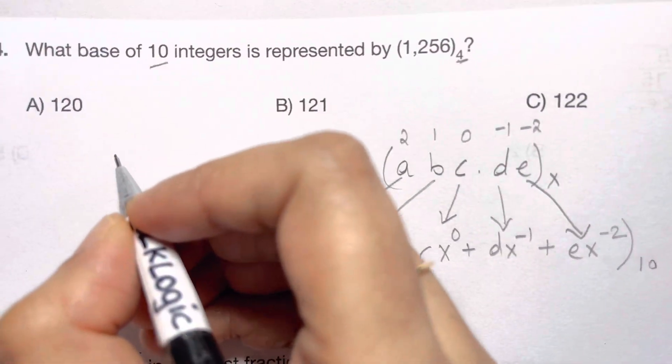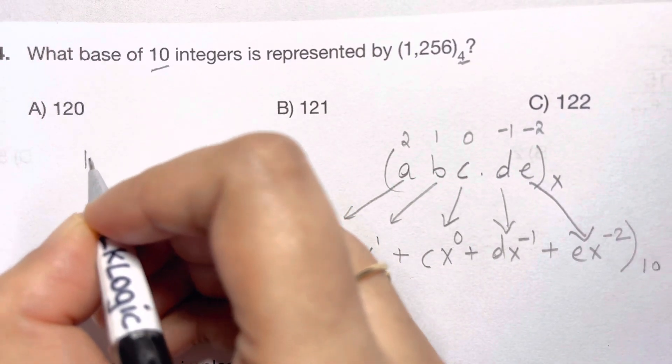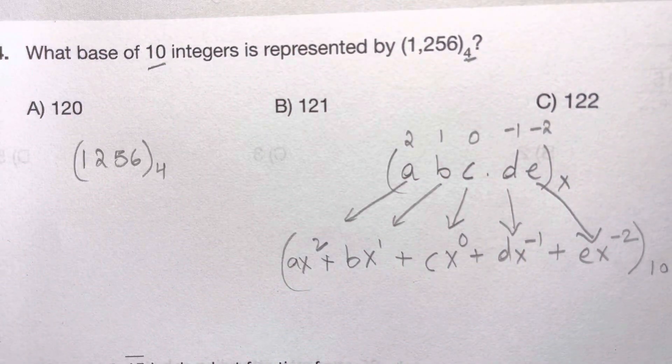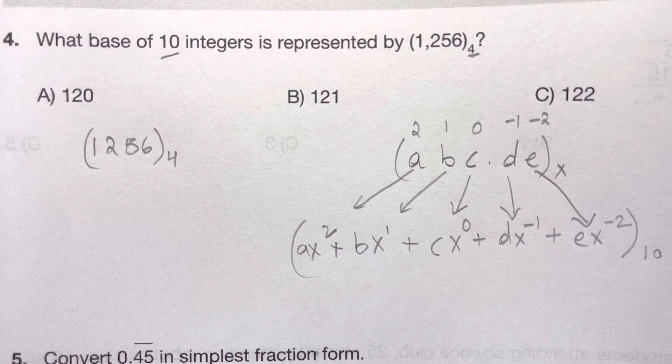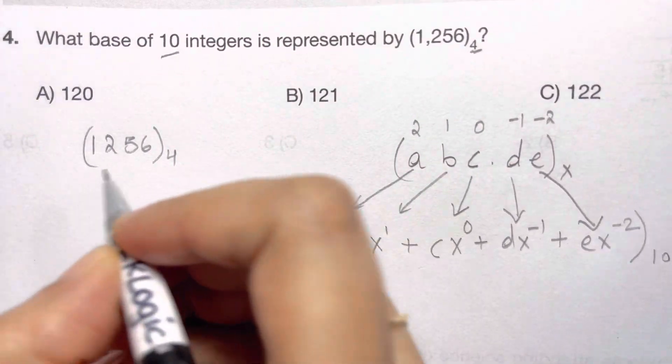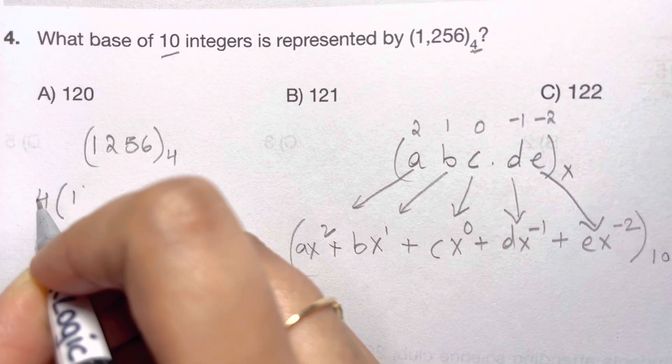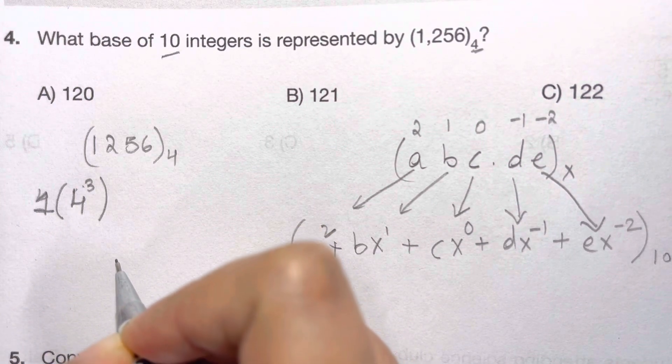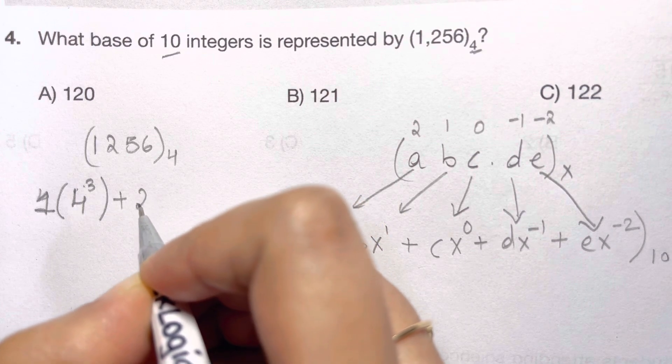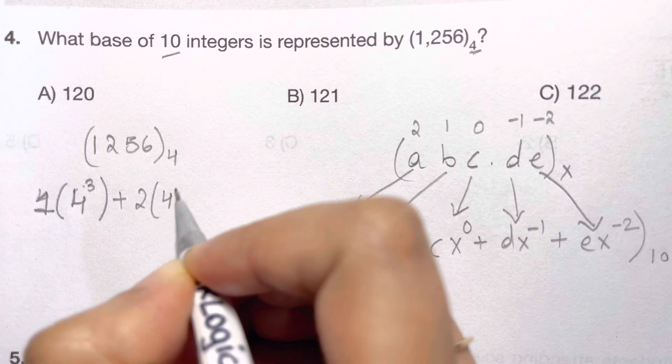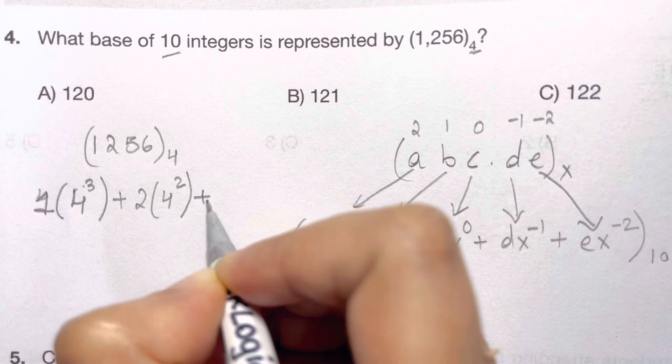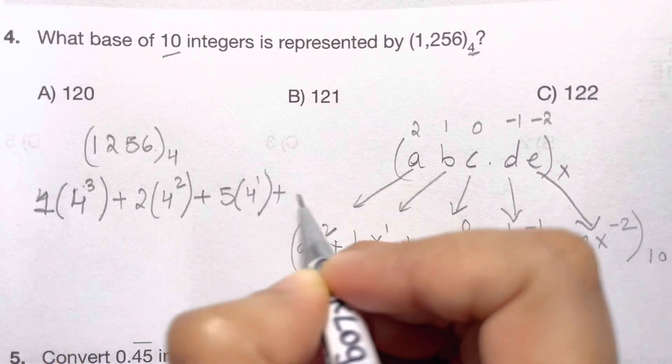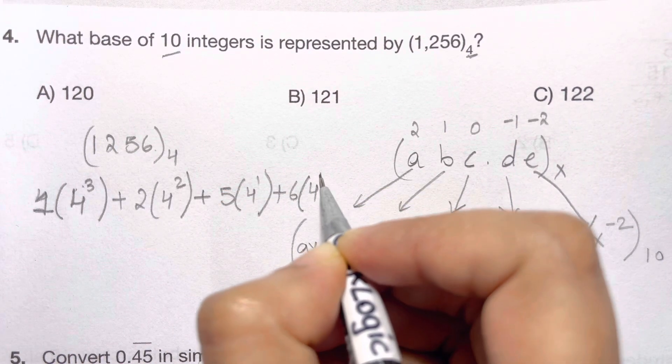So what do we have here? 1, 2, 5, 6 to the base of 4. Now converting to the base of 10, let's do it. So we have 1 times 4 to the power of 3 plus 2 times 4 to the power of 2 plus 5 times 4 to the power of 1 plus 6 times 4 to the power of 0.